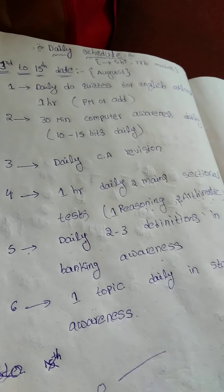This schedule tries to cover all sections — English, Computer Awareness, Current Affairs, Reasoning, Arithmetic, Banking Awareness, and Static Awareness — covering all five sections in both SBI and RRB mains. After the 15th, on the 16th, I will upload the next part of the schedule.